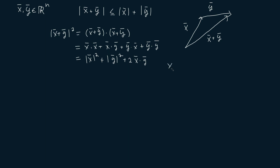Now we note that x dot y is always less than or equal to the absolute value of x dot y. And according to the Cauchy-Schwarz inequality, this is then less than or equal to the magnitude of x times the magnitude of y. I have a separate video proving this inequality.